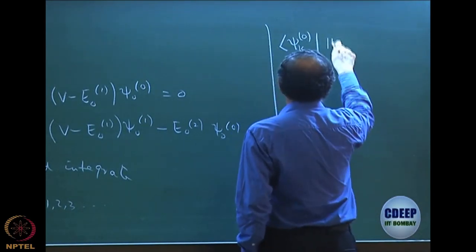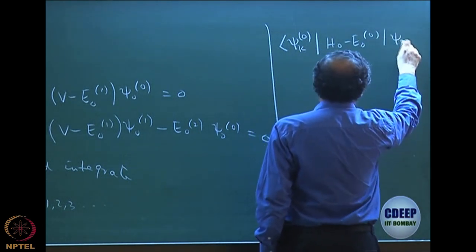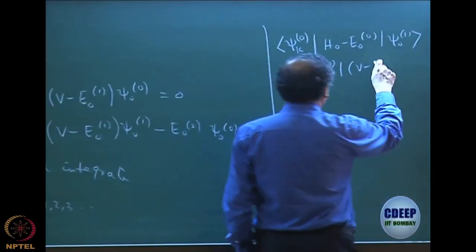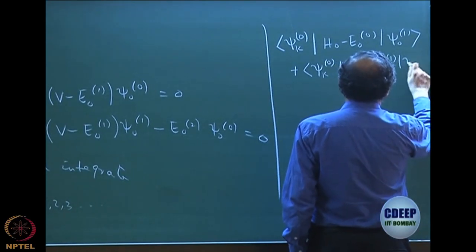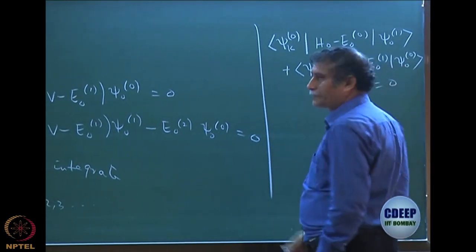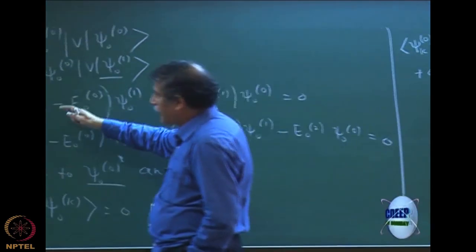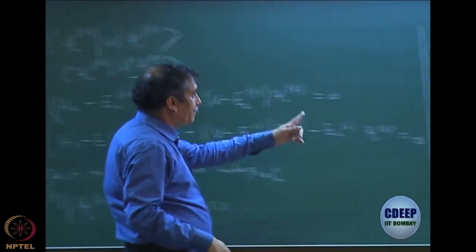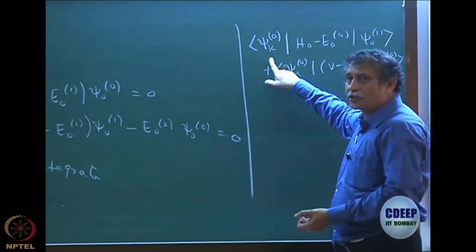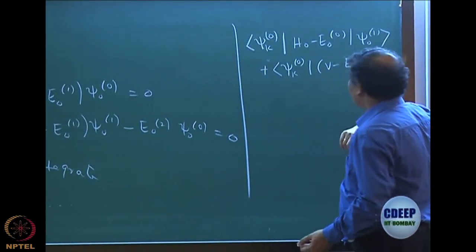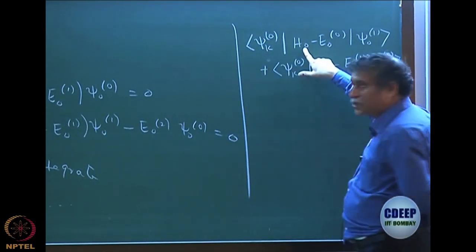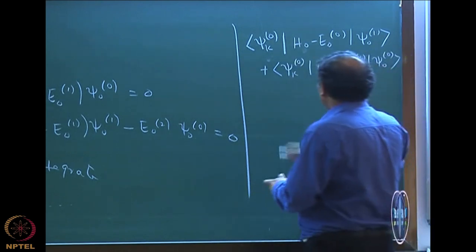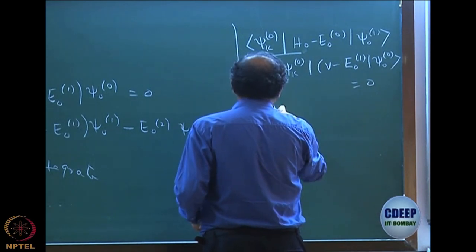I take this first order perturbation equation and multiply by ψk0 star and integrate, getting: ⟨ψk0 | H0 minus E00 | ψ01⟩ plus the V terms. When I projected with ψ00, this H0 term became zero. But now ψk0 is an eigenfunction of H0 with eigenvalue Ek0, not E00. So this will not become zero. It will become Ek0 minus E00 times ⟨ψk0 | ψ01⟩.